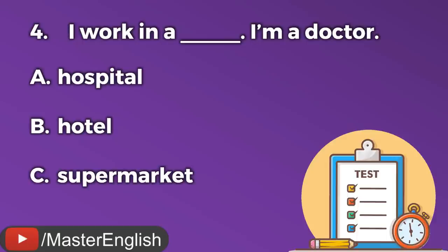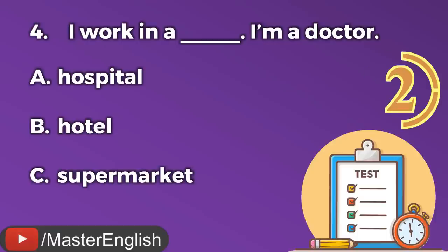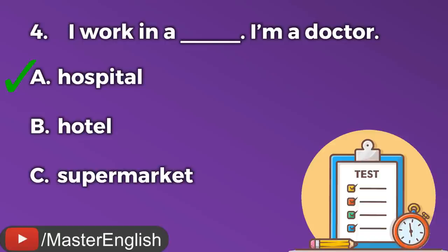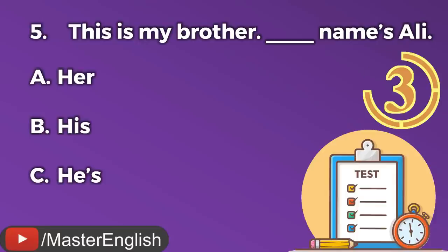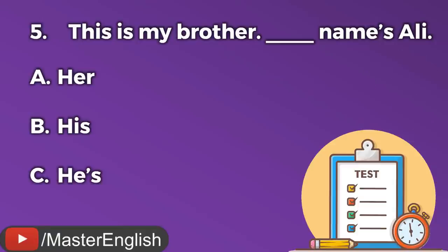Question number four. I work in a ___. I'm a doctor. A: Hospital. B: Hotel. C: Supermarket. The correct answer is A: Hospital. Question number five. This is my brother. ___ name is Ali. A: Her. B: His. C: He's. The correct answer is B: His.